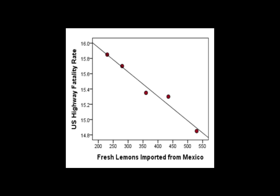However, intuitively that makes no sense. We wouldn't expect that more lemons would cause a lower fatality rate. So this is a scenario where there's a high correlation, but this doesn't imply causation. More lemons will not cause a lower fatality rate.